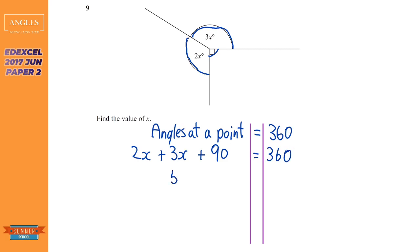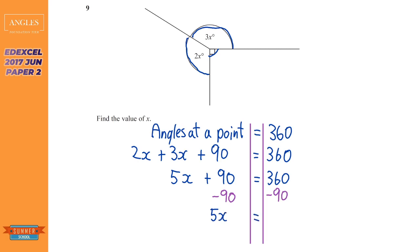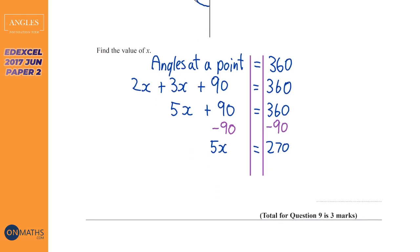2x plus 3x is going to be 5x — we've just collected the like terms. We need to find out what x is, so on both sides of the equation we're going to get rid of that plus 90 from the left hand side. The opposite of plus 90 is take away 90, so whatever you do to the left you've got to do to the right. On the left hand side we're just left with 5x and on the right hand side we're left with 270.